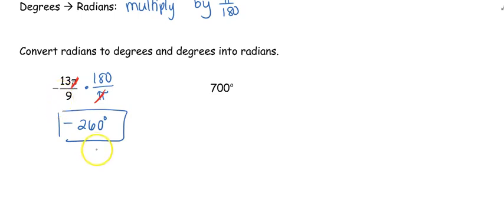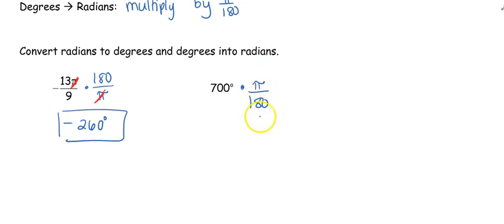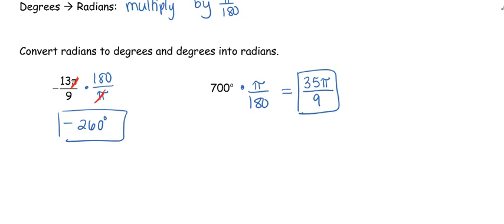So if it's a negative angle in radians, it's going to be a negative angle in degrees. Now we have degrees — we know it's degrees because we have a degree marker and no pi. I want to go into radians, so I multiply by pi over 180. In your calculator, take 700 divided by 180, reduce that fraction, which gives you 35 over 9, and add the pi — your answer is 35 pi over 9.